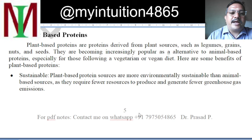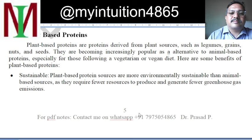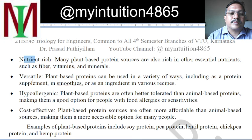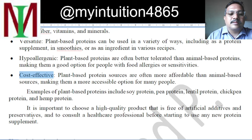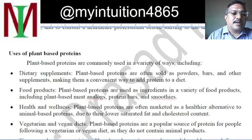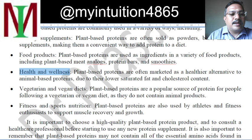Plant-based proteins are proteins derived from plant sources such as legumes, grains, nuts and seeds. They have become popular as an alternative to animal-based protein due to benefits like sustainability, being nutrient-rich, versatile, hypoallergenic and cost-effective. Examples include soy protein, pea protein, lentil protein, chickpea protein, hemp protein, etc. Uses include: dietary supplement, food product, health and wellness product, vegetarian and vegan diets, and fitness and sports nutrition.